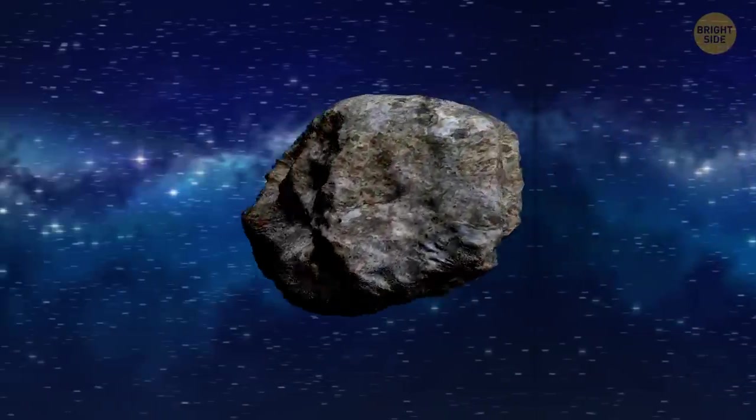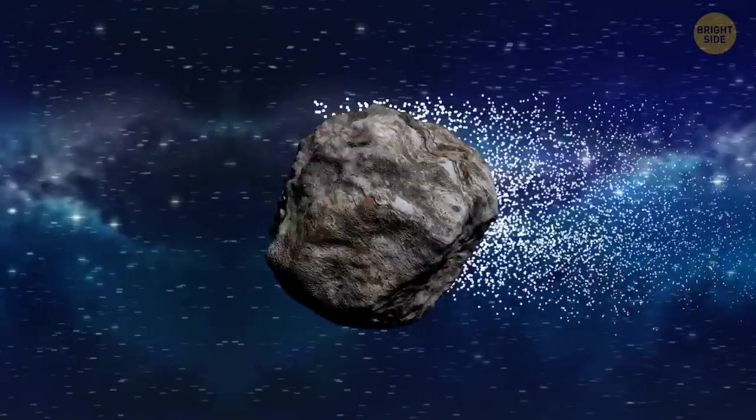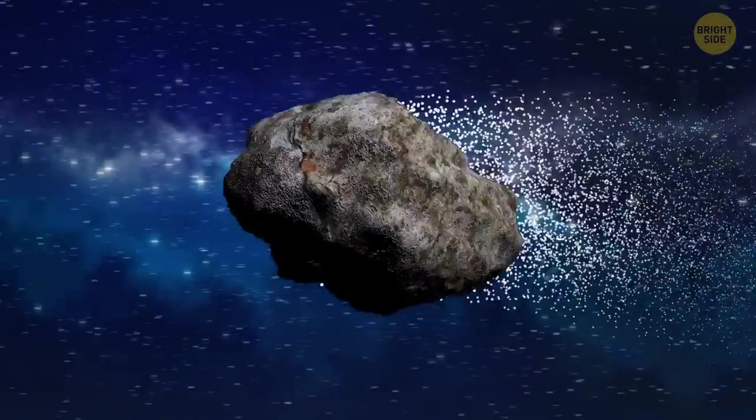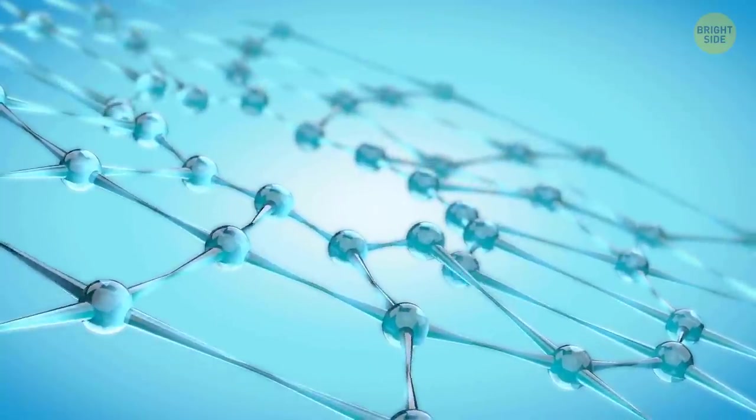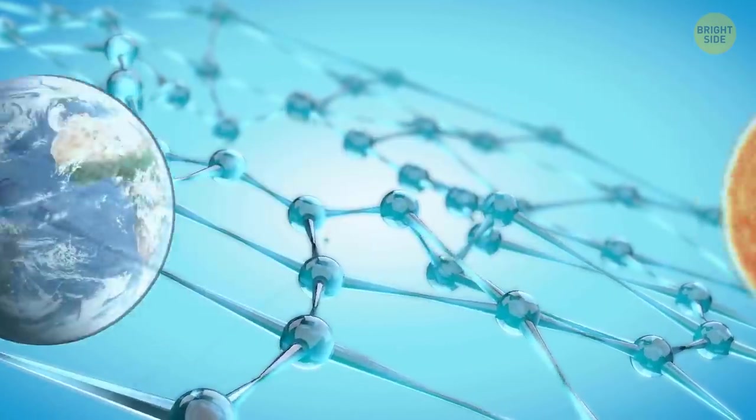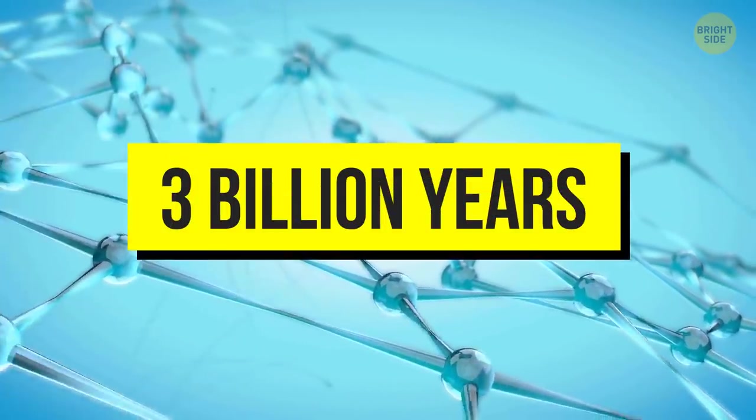The meteorite was covered in stardust, solar grains that formed about 7 billion years ago. The unpleasant smell came from a substance older than our planet and even our sun by 3 billion years.